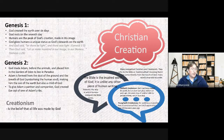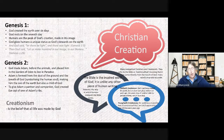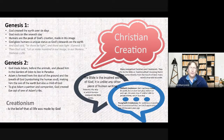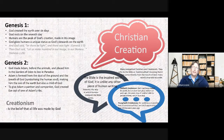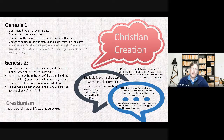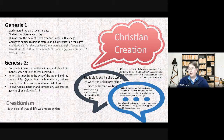There have always been Christians who were old earth creationists — long before Darwin or the big bang. Augustine, for example, believed God created over a long period of time. Old earth creationists say creation took place millions of years ago, and the seven days of creation may refer to periods of time. The Hebrew word for day, 'yom,' can refer to a period of time, not just a 24-hour period.